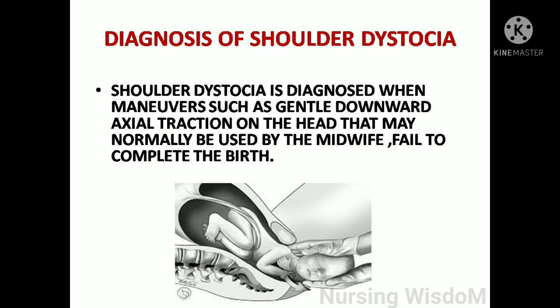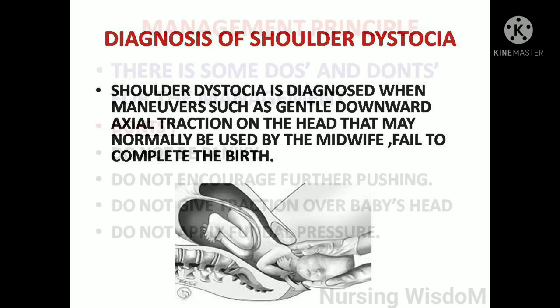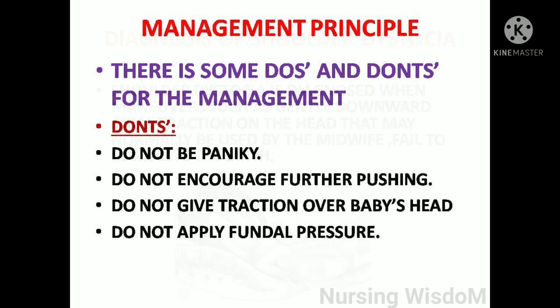Diagnosis of shoulder dystocia is made when maneuvers such as gentle downward axial traction on the head — which may normally be used by the midwife — fail to complete the birth.